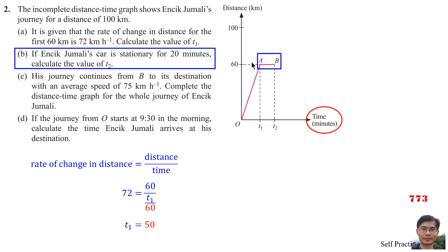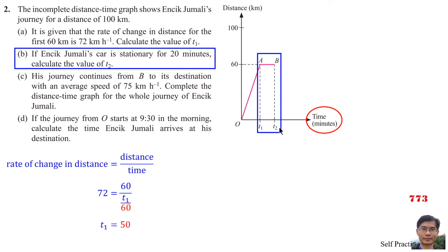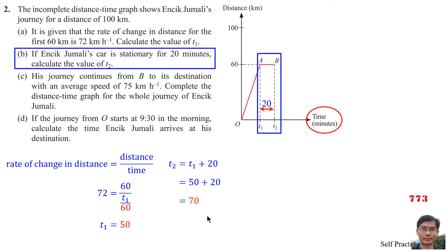For part B, looking at segment AB, the distance is not changing — the object is stationary for 20 minutes. So T1 to T2 is 20 minutes. Therefore T2 equals T1 plus 20. Since T1 is 50, T2 equals 50 plus 20, which equals 70.